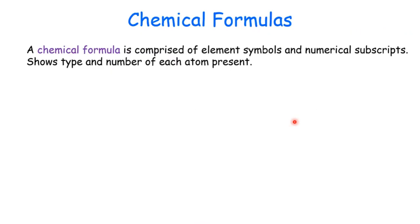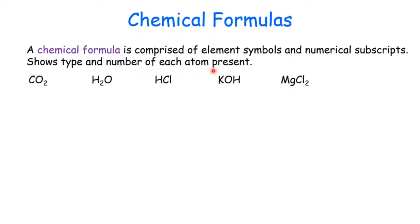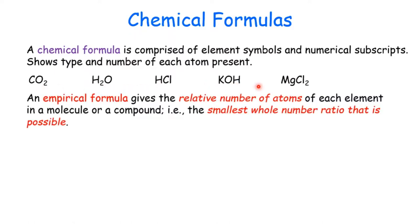A chemical formula is comprised of element symbols and numerical subscripts. The formula shows the type and number of each element present. They are all called chemical formulas, and mainly there are two types of formulas.